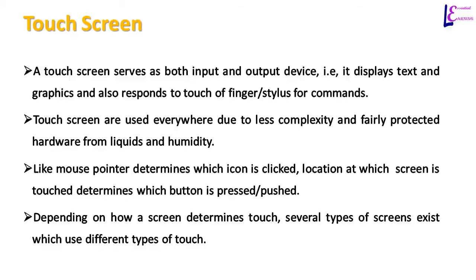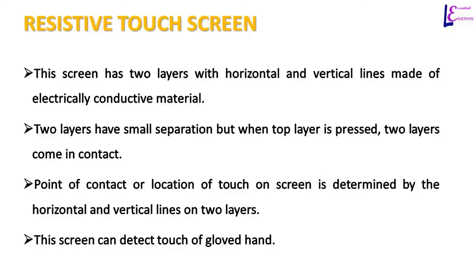A resistive touch screen has two layers with horizontal and vertical lines made of electrically conductive material. A small separation exists between the two layers. When the top layer is pressed due to touch, the two layers come in contact. The position of touch is determined by the horizontal and vertical lines on the two layers. This type of screen can detect touch of a gloved hand or insulated material.